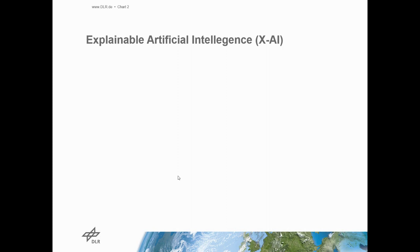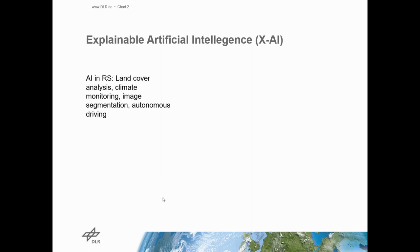Explainable artificial intelligence is basically ethical artificial intelligence that produces trustworthy decisions from the models. We already know there are many applications of AI in remote sensing like in land cover analysis, climate monitoring, image segmentation and autonomous driving.